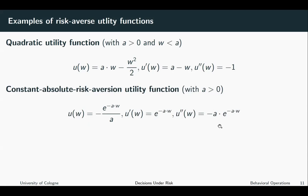So we also have decreasing marginal utility from money here. What does it mean to have a constant absolute risk aversion utility function? It means that your wealth level has no influence on your lottery decisions. Put differently, if you prefer lottery A to lottery B at a wealth of 10, then you will also prefer lottery A to lottery B at all other wealth levels. Constant absolute risk aversion means your wealth level has no influence on your decisions under risk.